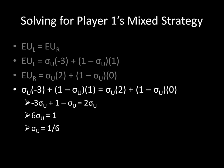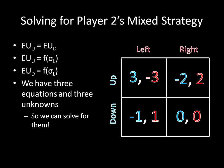Now we're going to do the opposite thing — the same process but switching the players around. This time we're asking: what is player one's expected utility for up, and what is player one's expected utility for down? We're going to set those two things equal to each other. His expected utility for up is just a function of player two's mixed strategy, represented by sigma_l. We still have three equations and three unknowns, so we can solve for them.